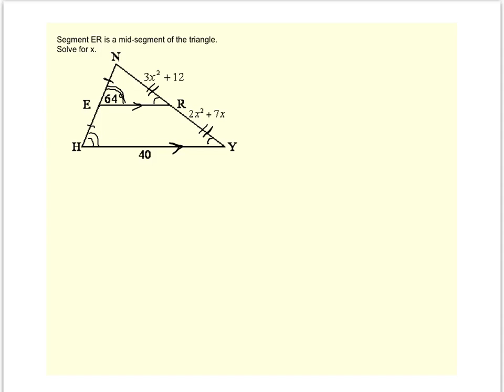Now the problem asks us to solve for x. So x refers to side lengths, in particular, side lengths NR and RY. Now because ER is a mid-segment, I know that those side lengths must be equal.